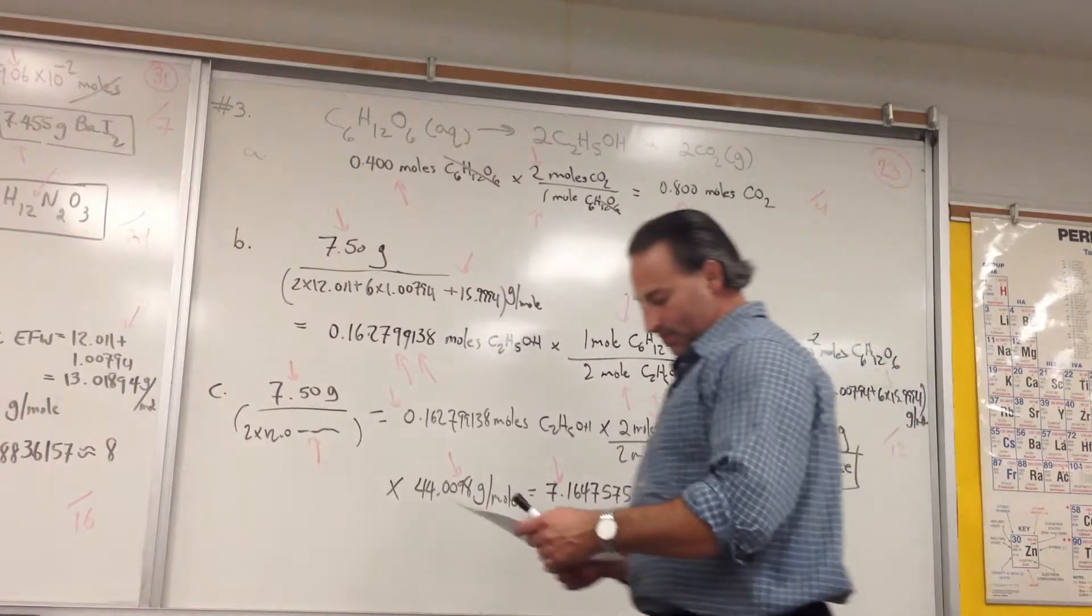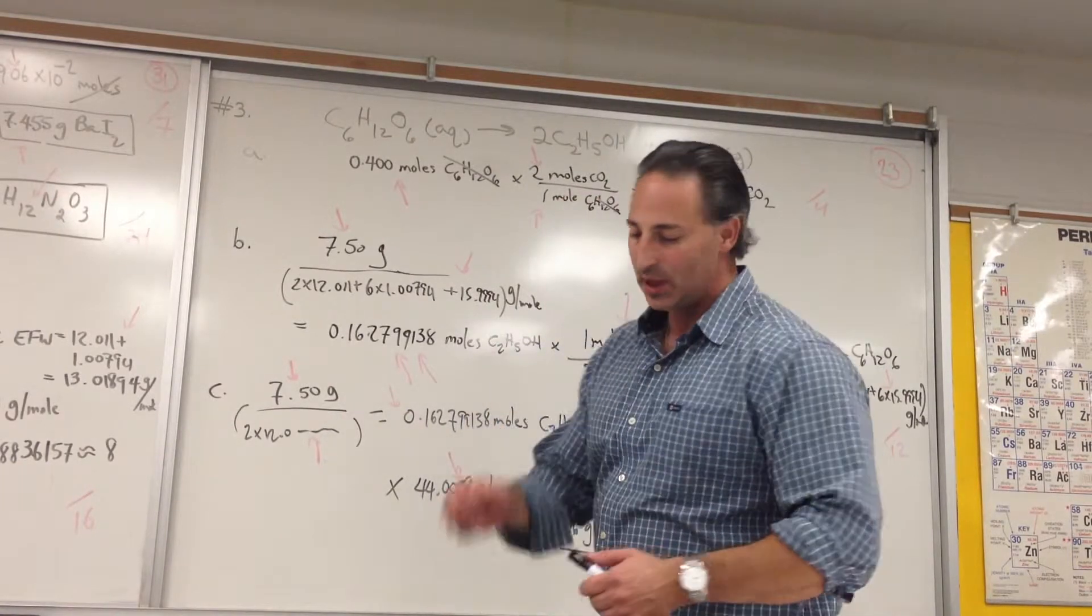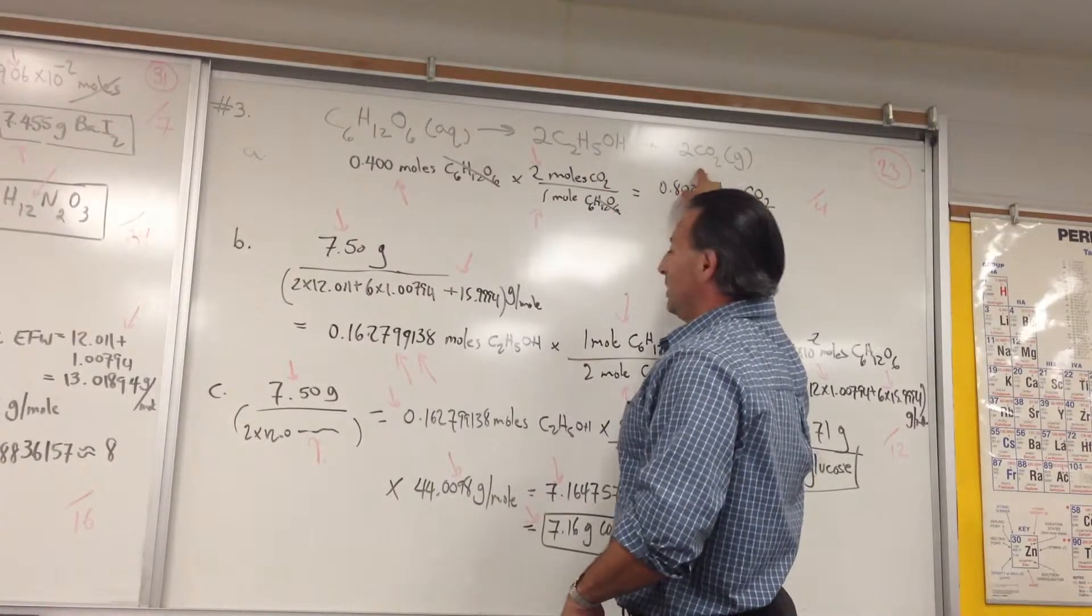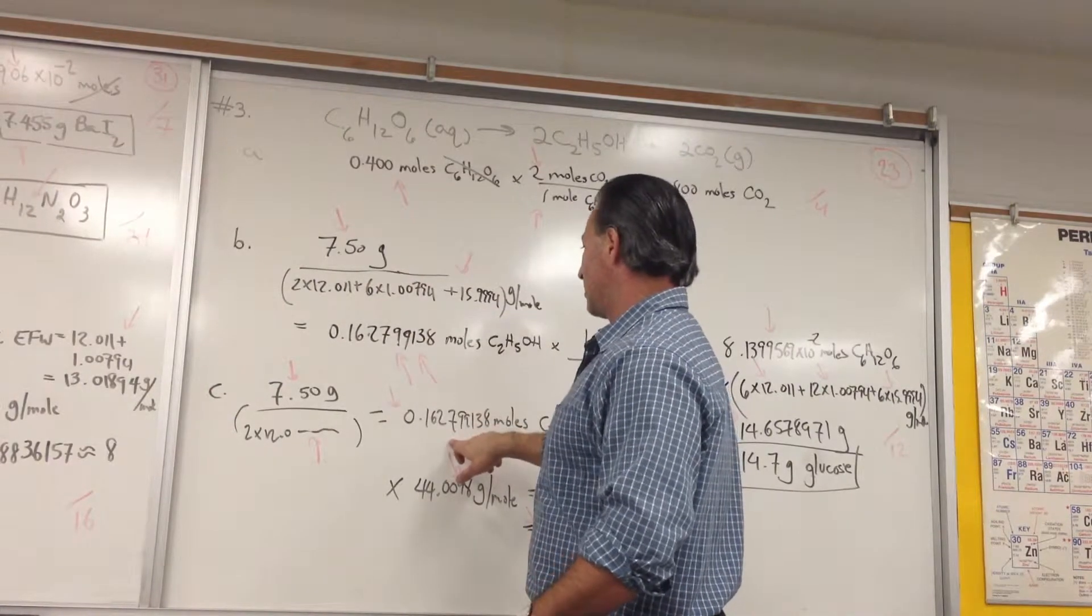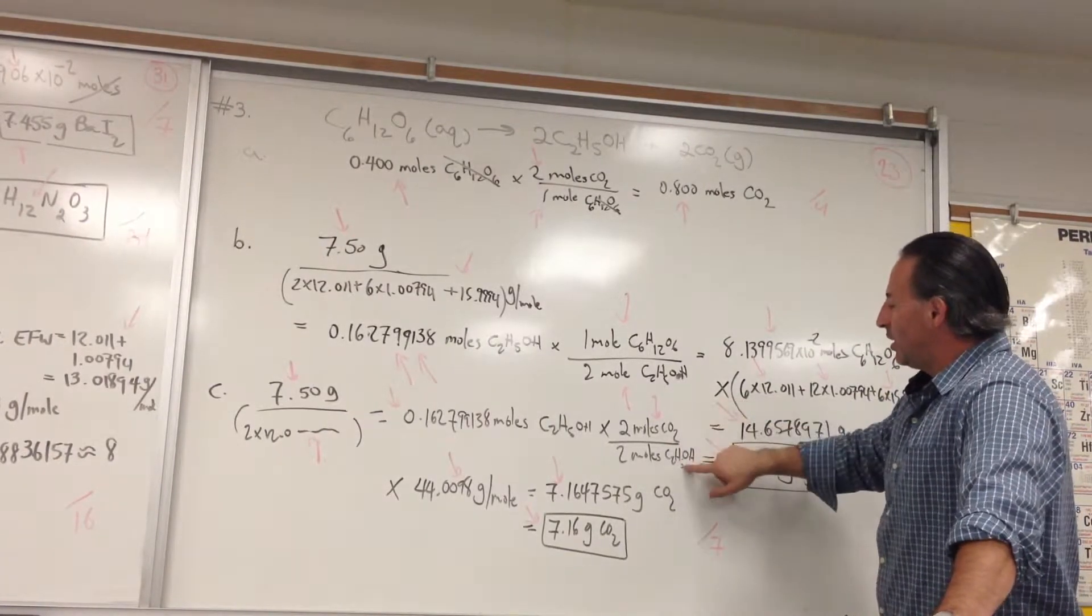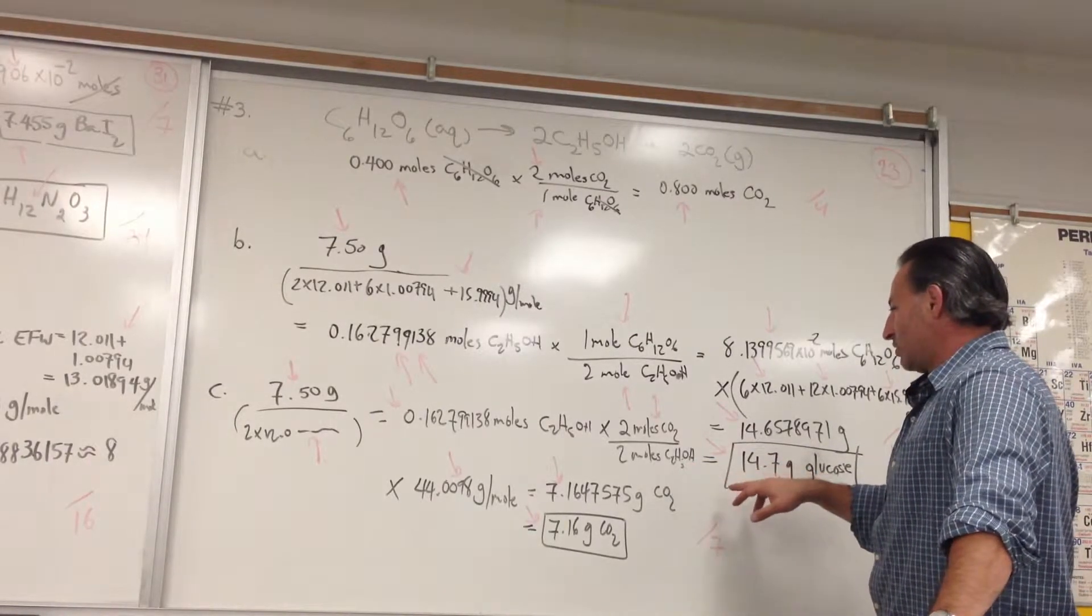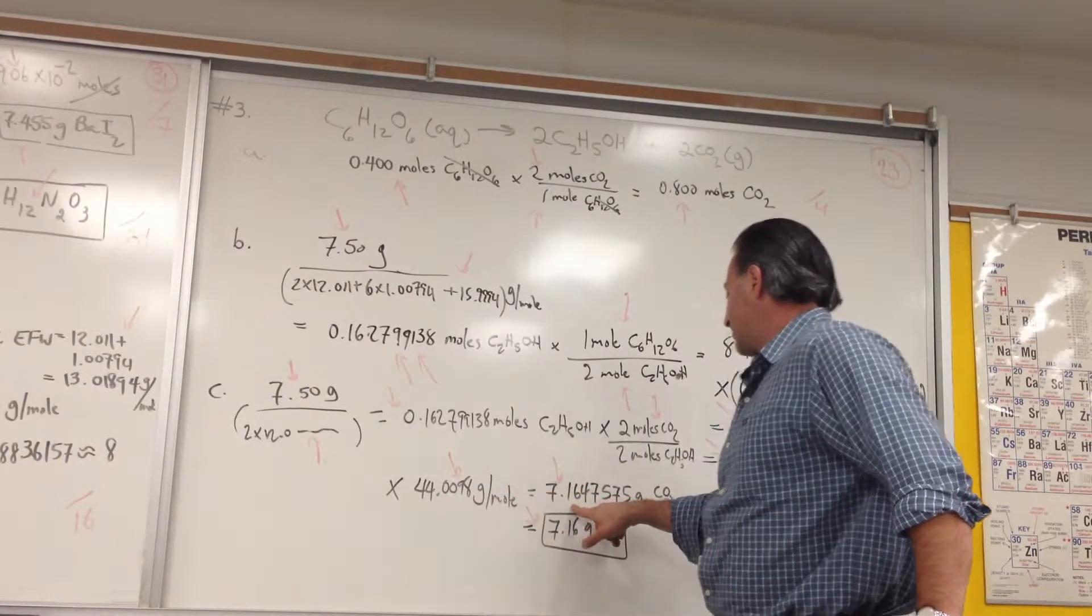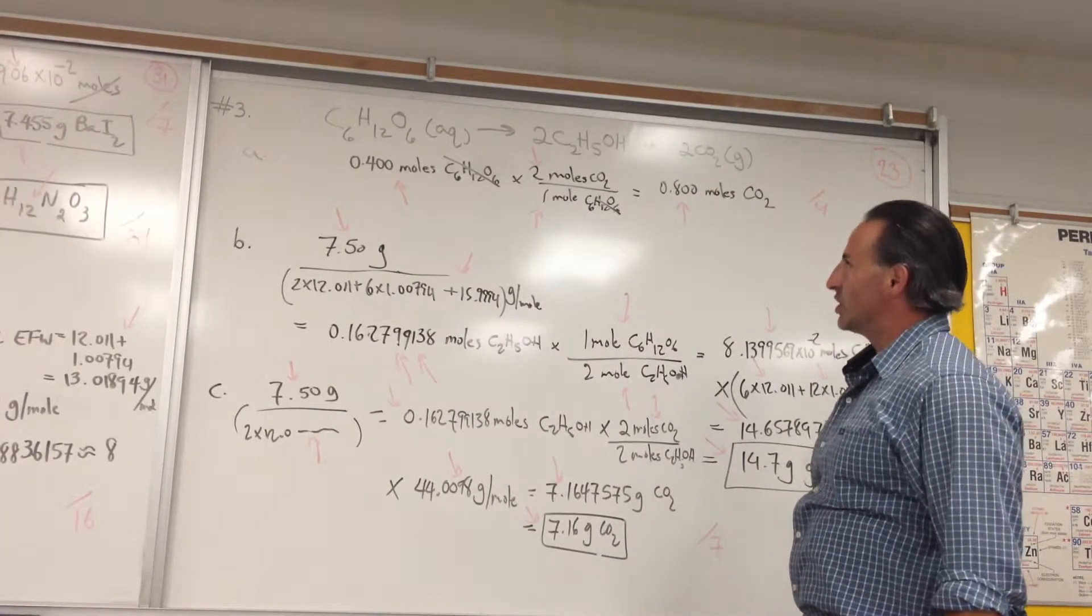The last part of this question, how many grams of CO2 form when 7.5 grams of ethanol are produced? So now, 7.5 grams of ethanol, but now how much CO2 is produced? Same number of moles, because it's the same number. It gives you the same number of moles of ethanol, but now this stoichiometry is 2 to 2. For every 2 moles of CO2 that appear, 2 moles of ethanol as well will have been produced by this reaction. That will result in, multiplied by the molar mass of CO2, 7.164 grams of CO2. You're only allowed to report it to 3 significant figures. So, final answer, 7.16 grams of CO2 is generated.